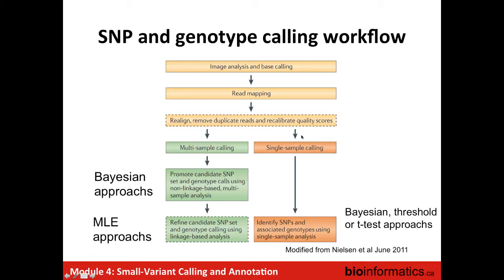With single-sample calling, the idea is to find every site and determine the genotype at the same time. Most methods use a Bayesian approach, but if you have enough coverage — more than 100x — some callers will use a threshold approach: if you have between 20% and 80% variant reads you are heterozygous, more than 80% is homozygous variant, and less than 20% is homozygous reference. Really fast and easy, but it only works if you have enough coverage.